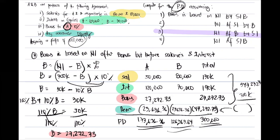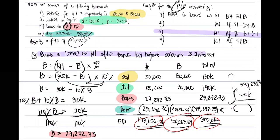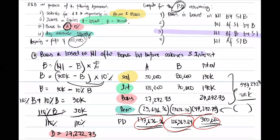That's our profit distribution for Assumption 3 — bonus based on net income after bonus but before salaries and interest. Follow the formula for bonus, and after computing the bonus, since there is no hierarchy, distribute everything even if the remainder is negative at the end.